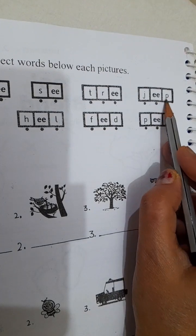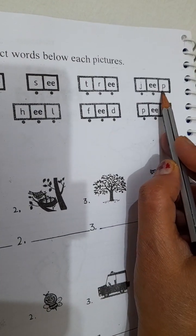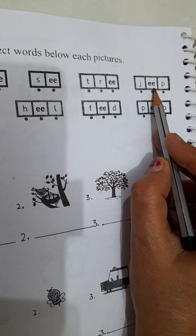J, E, E, P, jeep. J, E, E, P, jeep. Tree, jeep.